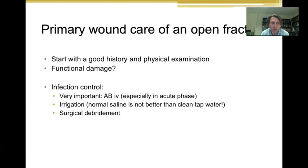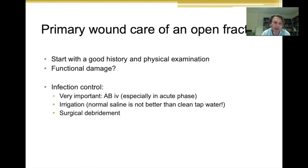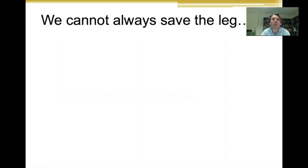Always start with a good history and physical examination. Is there functional damage? You have to ask the patient questions and do specific tests to find out if nerves, blood vessels, and tendons are still functioning. Be aware of the importance of infection control. Antibiotics should be given as early as possible, then irrigation is very important to wash away all the dirt from the wounds. Then go to theater with a specific plan, and the first thing to do is a surgical debridement to prevent infection.